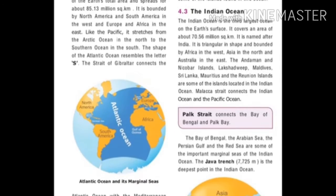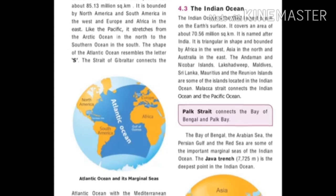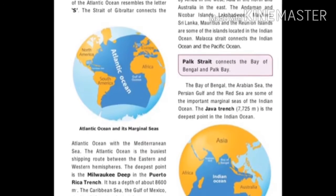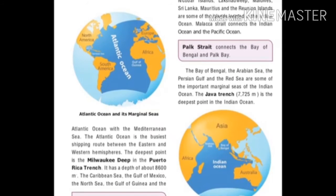Andaman and Nicobar Islands, Lakshadweep, Maldives, Sri Lanka, Mauritius and Reunion Islands are some of the islands located in the Indian Ocean. The Malacca Strait connects the Indian Ocean and the Pacific Ocean. The Palk Strait connects the Bay of Bengal and Palk Bay. The Bay of Bengal, the Arabian Sea, the Persian Gulf and the Red Sea are some important marginal seas of the Indian Ocean.